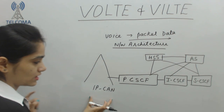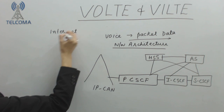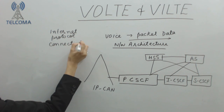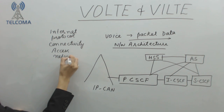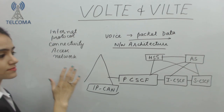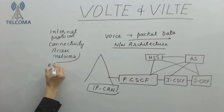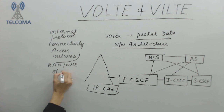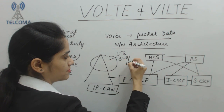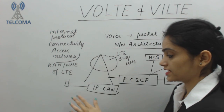Let's start from the very first unit: IP-CAN. IP-CAN stands for Internet Protocol Connectivity Access Network. IP-CAN is basically the radio access network and MME of LTE — that means this unit covers the eNodeB and MME part. The user is connected to IP-CAN, so the first interface to the user is provided by IP-CAN.